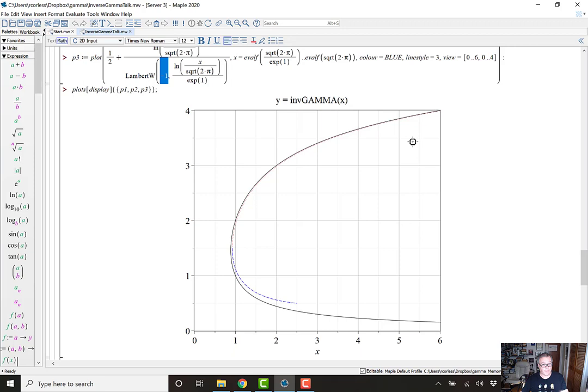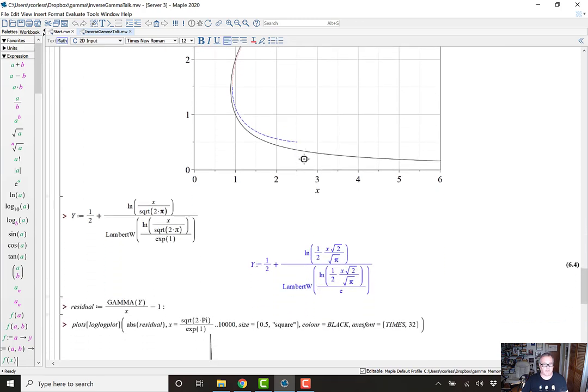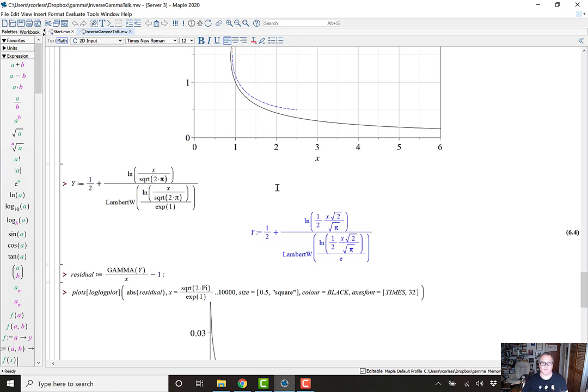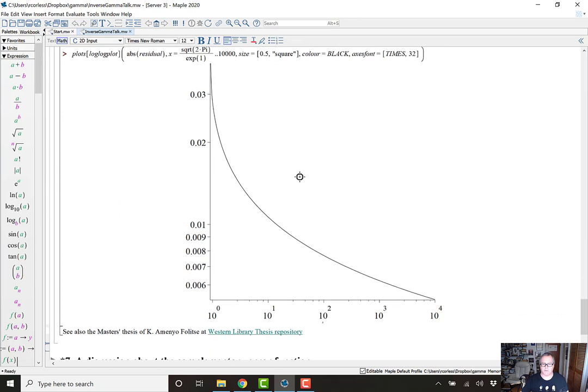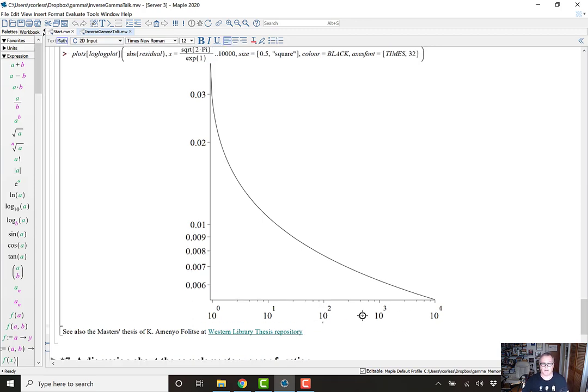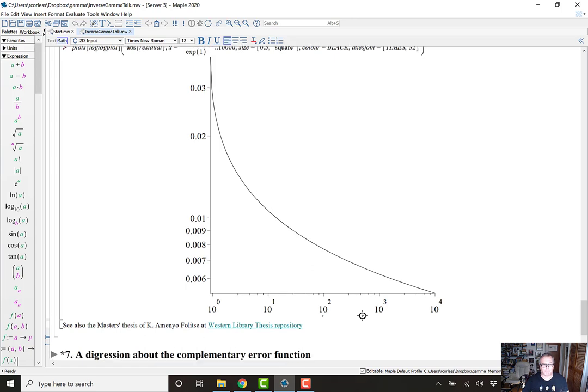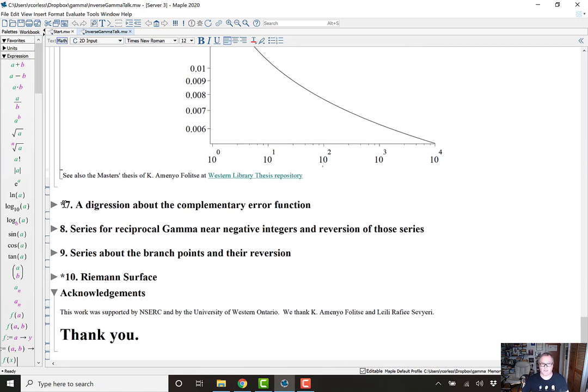So this is just an astonishingly accurate approximation to the functional inverse of gamma in the first quadrant. So we can actually regard that as being pretty much solved in there because with that initial guess, we could use Newton's method with no trouble at all to find the inverse gamma. Just to be perfectly clear about it, there is the formula for the approximation to the functional inverse of gamma in the right half plane. And if we plot the residual, we see the residual goes to zero slowly, but it goes to zero as X goes to infinity. So you can see the master's thesis of Amenio Folletze at the Western Library repository for more details on that. There's some connections to the complementary error function, but everything with a star on this worksheet, I'm going to skip over.